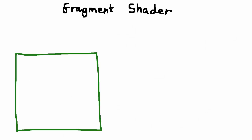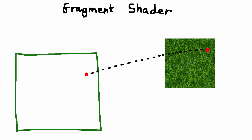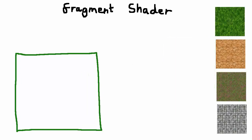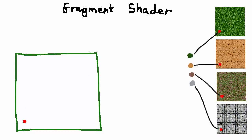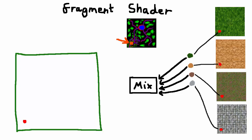Usually in the fragment shader, for each pixel of the terrain we get the colour of the pixel at the corresponding place on the terrain's texture, and we use that as the colour of the terrain at this point. But this week we're going to be using four textures, and for each pixel on the terrain we're going to be getting the colour at the corresponding point on each of the four textures, giving us four colours. The final colour of the pixel on the terrain will be a mixture of these four colours, and we use the colour of the corresponding point on the blend map to determine how much of each texture's colour makes up the final terrain pixel colour.